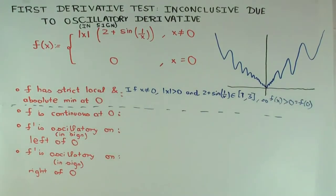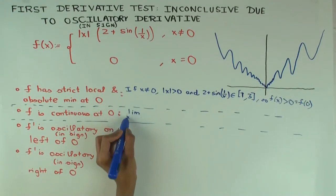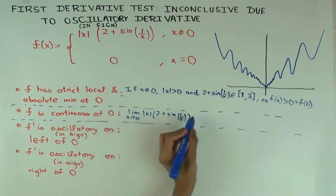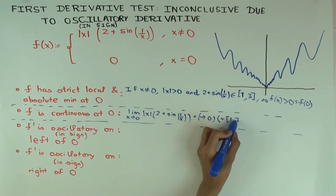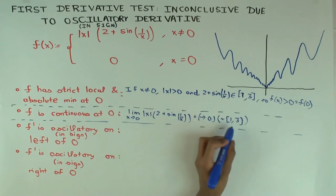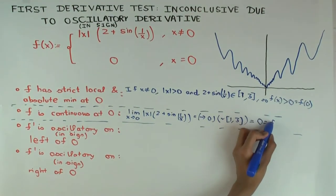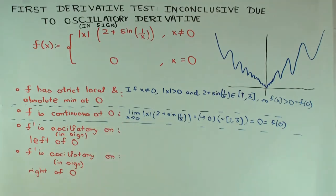That means f(x) is greater than zero, which is f(0). So we've established that it has a strict local and absolute minimum at zero, because everywhere else it's strictly bigger. What about continuity? To show continuity, take the limit: the limit as x approaches zero of |x| times (2 plus sin(1/x)). The absolute value of x part goes to zero, and 2 plus sin(1/x) is oscillating between 1 and 3. Approaching zero times anything that is bounded also gives you zero, which is f(0). So it's continuous, and that's one of the conditions to apply the first derivative test.